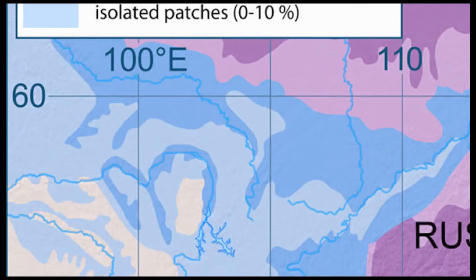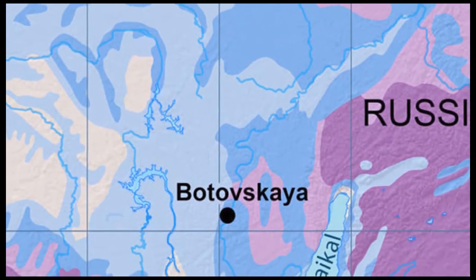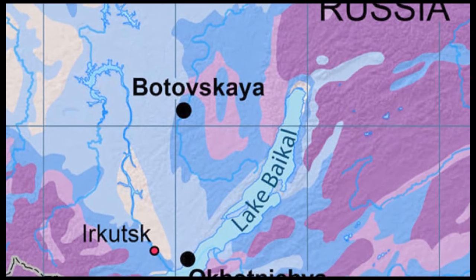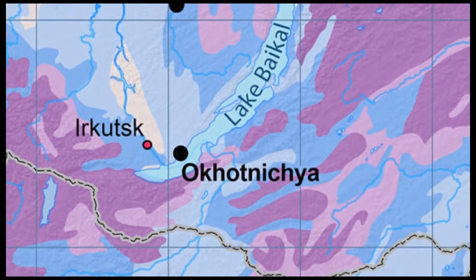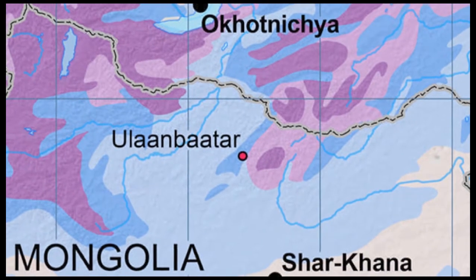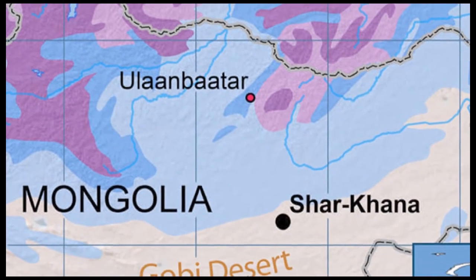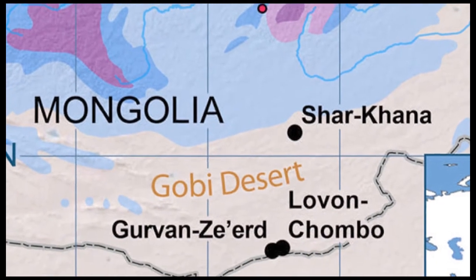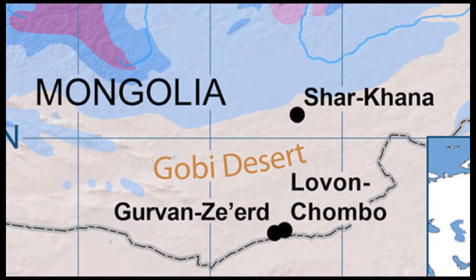We worked on a chain of six caves from latitude 60 in the north, on the boundary of continuous permafrost, through the area of Lake Baikal, which is much warmer and more temperate with discontinuous permafrost. The other three caves are in the Mongolian Gobi Desert at different locations. We also wanted to find out how the desert responded to climatic changes in the past.